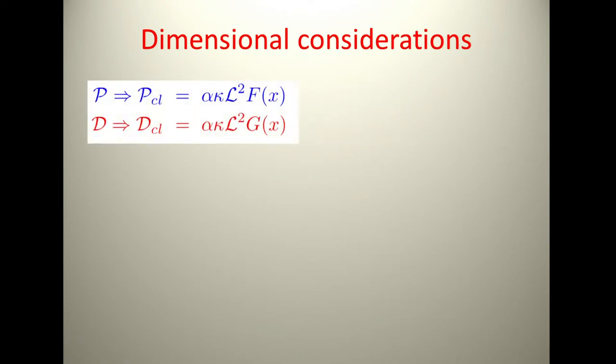If you do dimensional considerations carefully, you realize that both the production and the decay can be written in terms of the circulation and the density as kappa L squared, and then any function of a dimensionless parameter. The question is, what is X? If we follow Vinen, it's going to be VNS squared over kappa squared L.